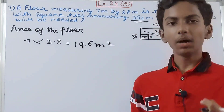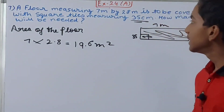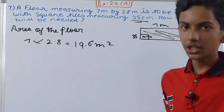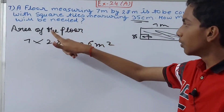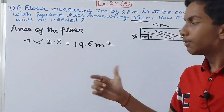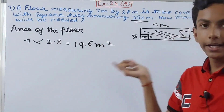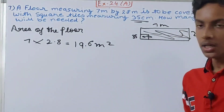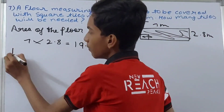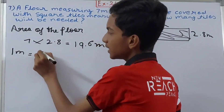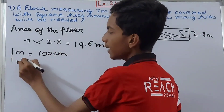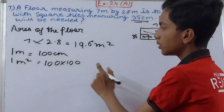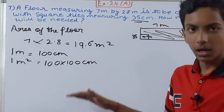But we have to check the units. The square tile dimension is in centimeters, but the floor dimension is in meters, and our area is also in square meters. So we will convert this area from square meters into square centimeters. The conversion: one meter has 100 centimeters, so one square meter will have 100 into 100 square centimeters.